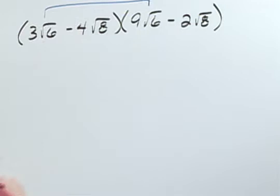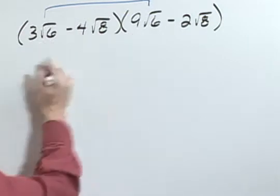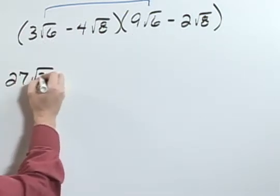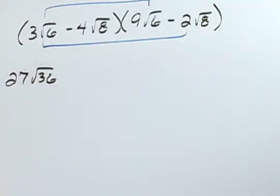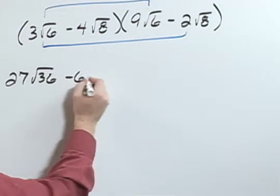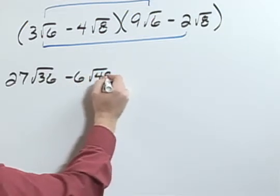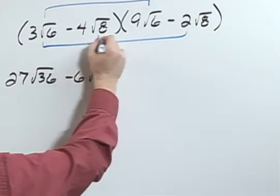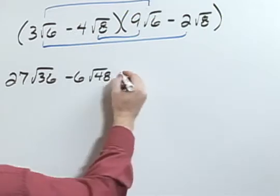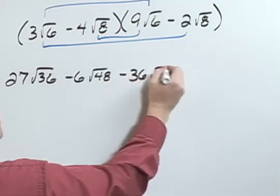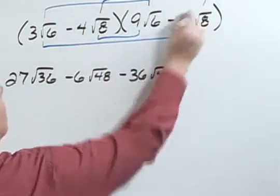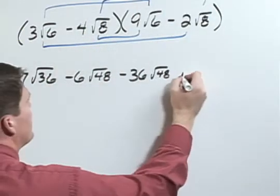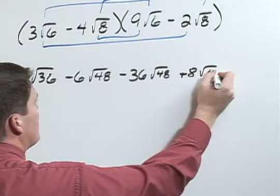So first, this times this would be 27 square root of 36. Outer is going to be negative 6 square root of 48. Inner would be negative 36 square root of 48. And last would be positive 8 square root of 64.